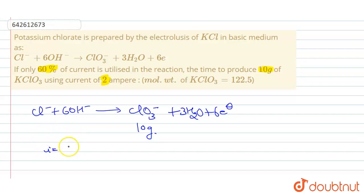What will happen? The 60% of 2 ampere equals to 1.2 ampere. So what will be the value of i? i will be 1.2 ampere.